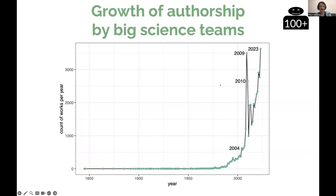If we look at the counts per year of works that have at least 100 authors, we can see that this was extremely rare before the end of the 20th century, but then it started growing and we have a very rapid increase in the last decade. There is a spike in 2009 and 2010 that I don't know the origin of — it could be some type of artifact in the dataset.